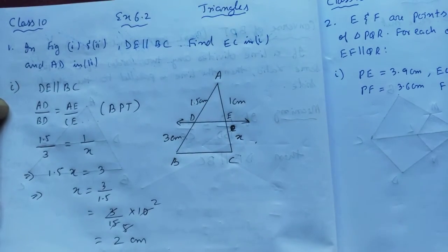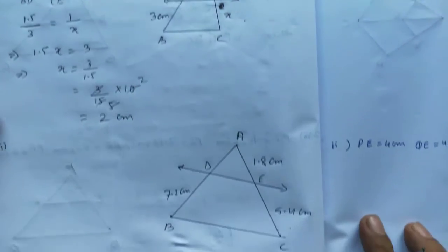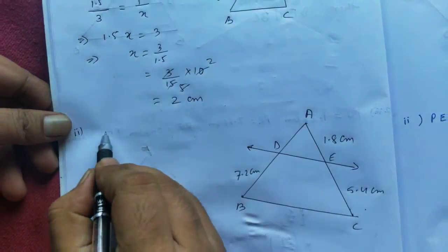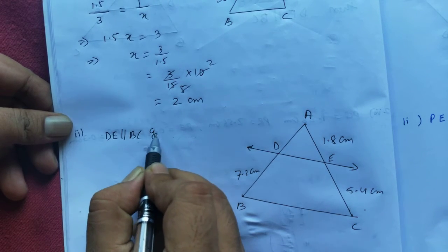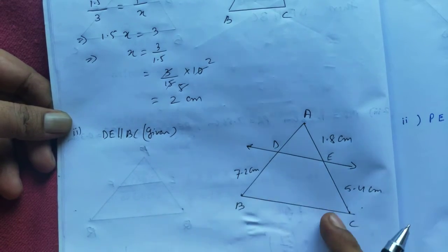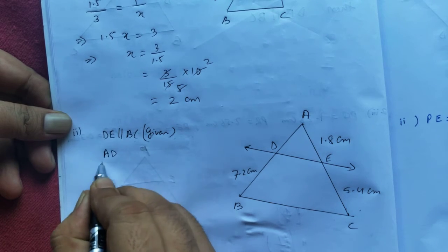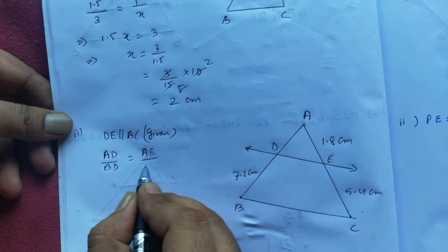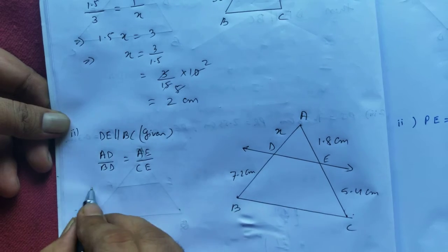So your answer is 2 cm. Similarly, let's do the second part of Question number one. The diagram is already given, and DE is parallel to BC is already given.